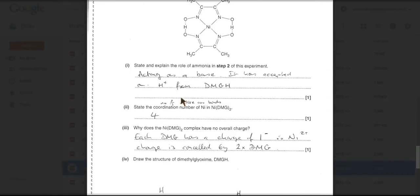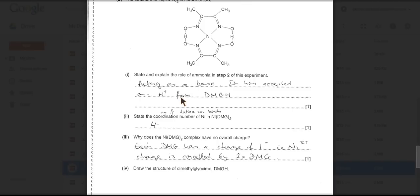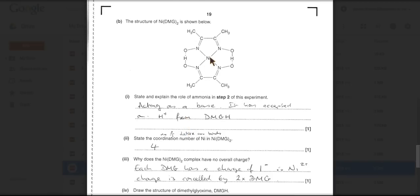The coordination number. Well that's the number of dative covalent bonds around the central transition metal ion. Or the number of coordinate bonds. And you can see from the diagram 1, 2, 3, 4.